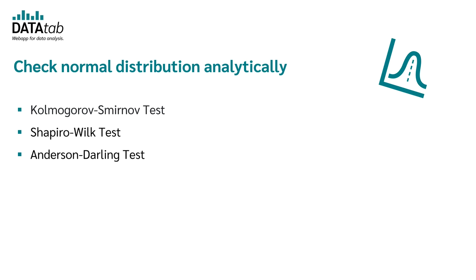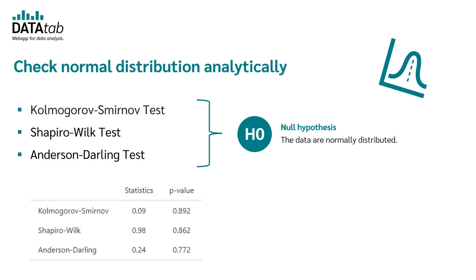With all these tests, you test the null hypothesis that the data are normally distributed. So, the null hypothesis is that the frequency distribution of your data fits the normal distribution. In order to reject or not reject the null hypothesis, you get a p-value out of all these tests.